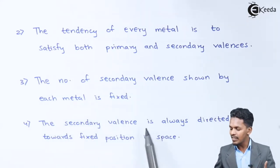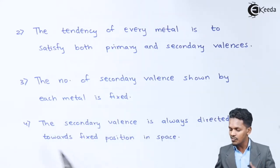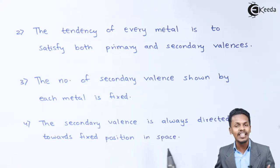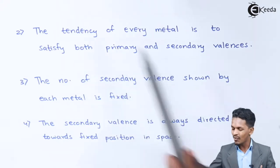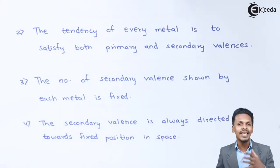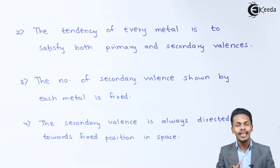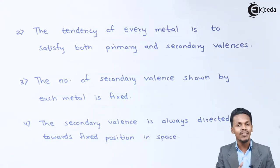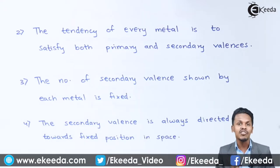The secondary valencies are always directed towards fixed positions in space. Now let me elaborate on what is actually the primary sphere, or what is actually the primary valency and the secondary valency.